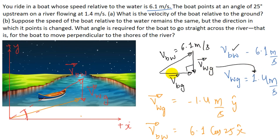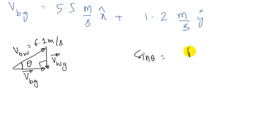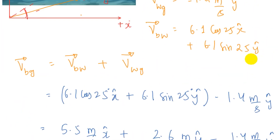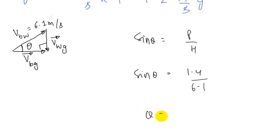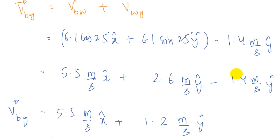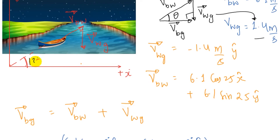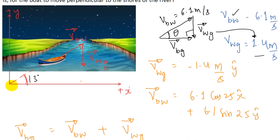The magnitude of boat relative to water remains 6.1 meters per second and the water speed is 1.4 meters per second. Using trigonometry to find the angle theta: sine theta equals the perpendicular over the hypotenuse, which is 1.4 divided by 6.1. Therefore theta equals sine inverse of 1.4 over 6.1, which is approximately 13 degrees. The boat should move at an angle of 13 degrees so that its velocity relative to the ground is perpendicular to the river. This is the answer for part B.